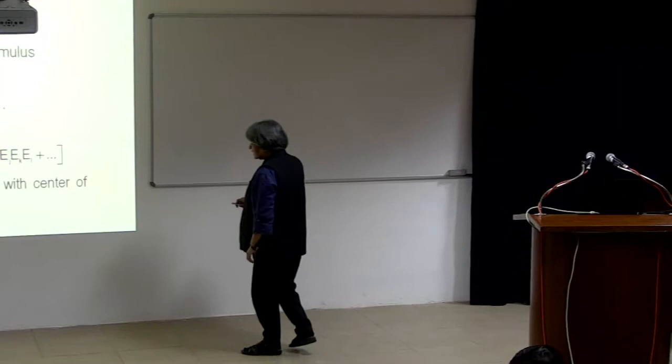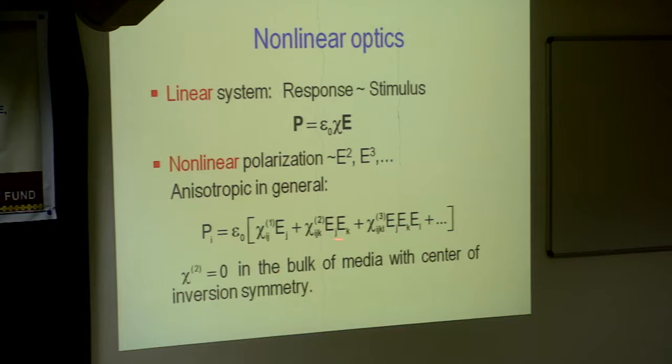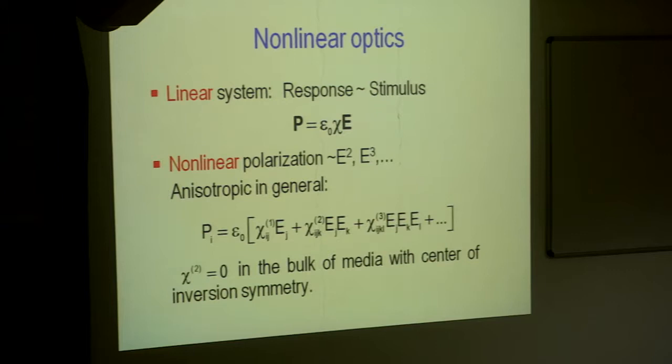When for example, I use a laser, the electric field residing in the laser could be quite large. As a result, a small number multiplied by the square of a large number can give you a response which is almost as good as the linear term. One more thing you can actually see that the second order term is 0 in the bulk of a medium which has center of inversion symmetry.